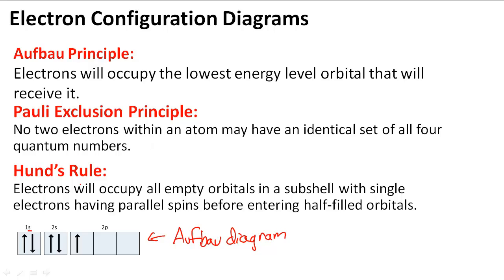Then we have Hund's rule. Electrons will occupy all empty orbitals in a subshell with single electrons having parallel spins before entering half-filled orbitals.